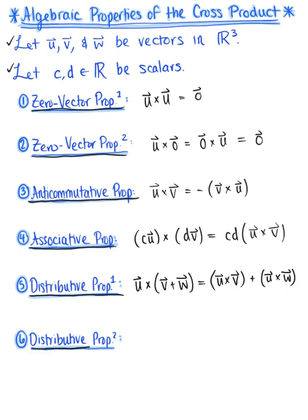Our last algebraic property, number six, is similar, but this time we have the sum of vector u and vector v crossed with vector w, which equals vector u cross vector w plus vector v cross vector w. Just like the algebraic properties of the dot product, we can easily verify these properties using computation, and I encourage and challenge you to try to verify some of them in R3.